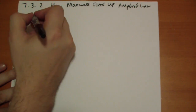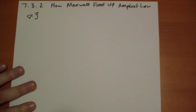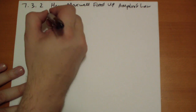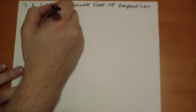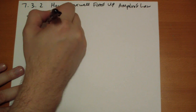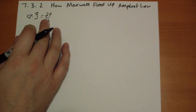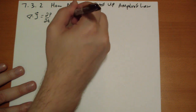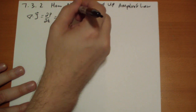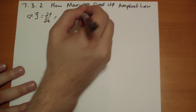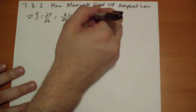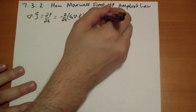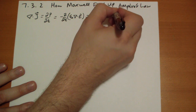Let's calculate what the divergence of J is. J is just the change in charge density at a point. And we know that the charge density is equal to the divergence of E. So we can take this divergence outside and get minus the divergence dot epsilon naught times the change in the E field.